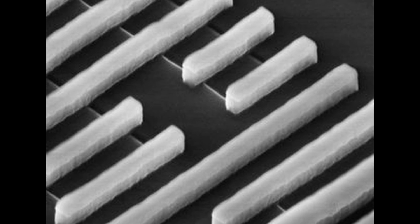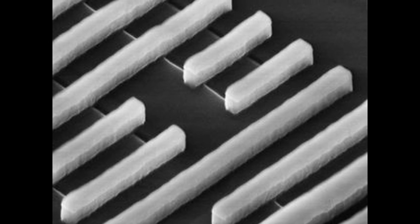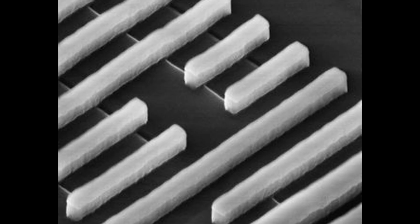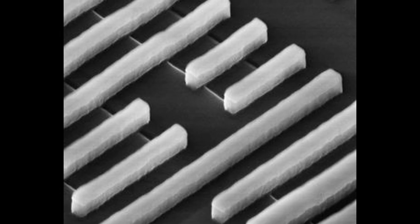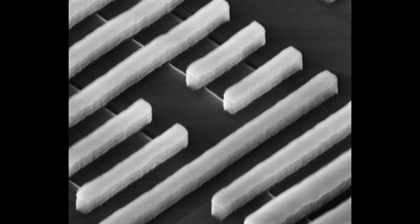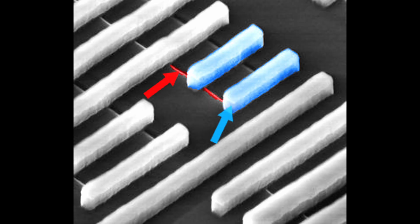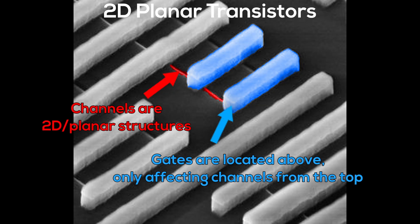For many decades, transistors were designed and built in 2D. In this transistor layout, source, drain and gate are located on a planar space, fittingly called a planar transistor. The planar nature of this design also meant that the electromagnetic field of the gate can control the channel from only one side — the top. Not much of a problem if the distance between source and drain is large enough to allow for a large gate with a large electromagnetic field.